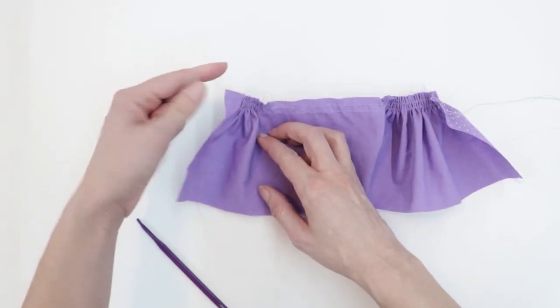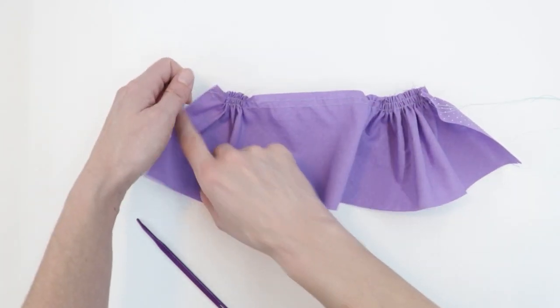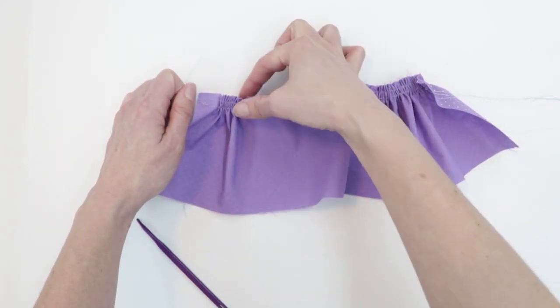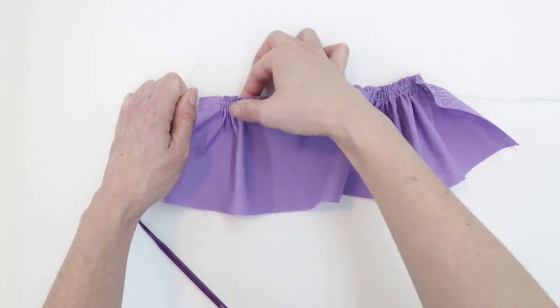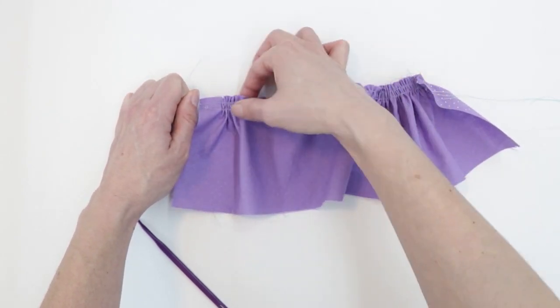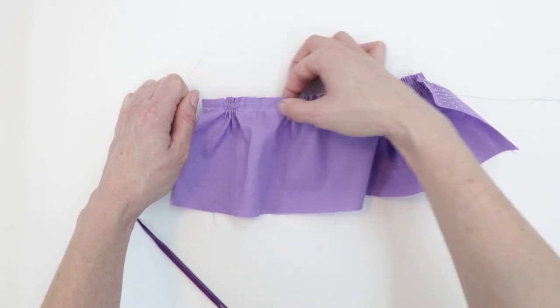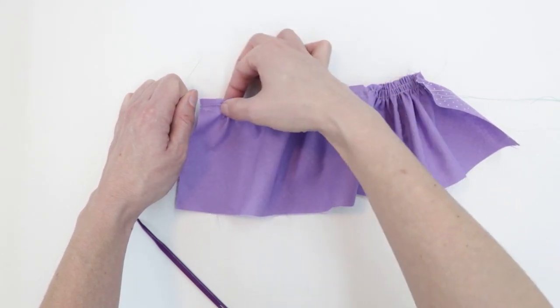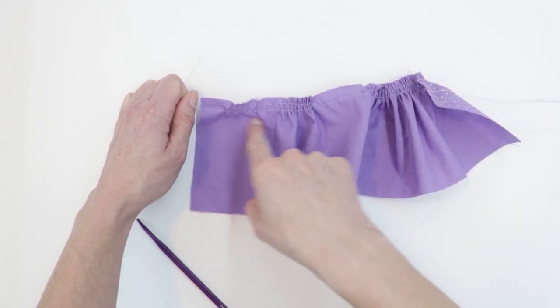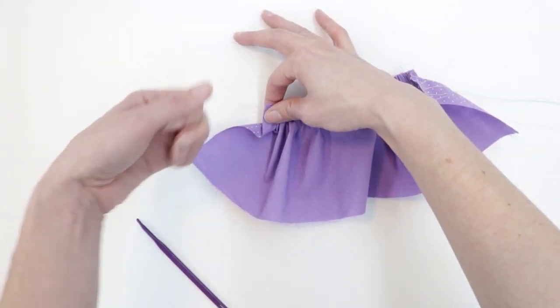And once it won't slide anymore I'm going to readjust my grip. Again I'm only holding those two threads and I'm going to start away from where I'm holding and slide it to the center. I'm just taking those little pleats and gathers I made before and sliding them further down the thread just very gently sliding it down.